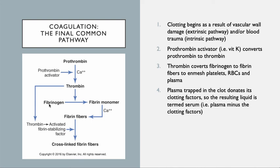In the final common pathway, prothrombin enters and gets activated by calcium to produce thrombin. Then fibrinogen gets turned into fibrin monomers, and those fibrin monomers get laid down in the clot when calcium is present. Those fibrin fibers pull in more platelets and more red blood cells, and that cross-linking of the fibrin fibers is what makes the blood clot.